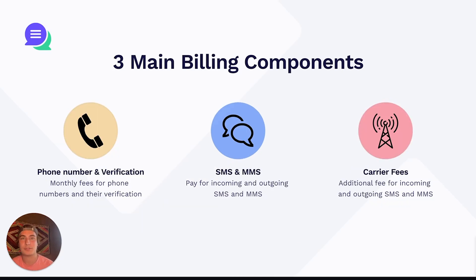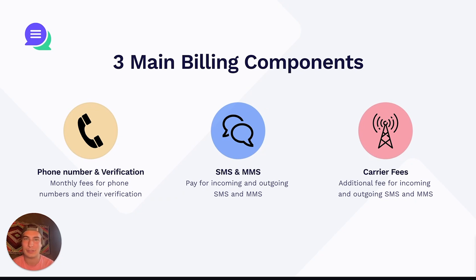So Twilio's pricing structure has three main billing components. First up is the phone number and verification. Next up is the per SMS and MMS fees — you're going to be paying for incoming and outgoing SMS and MMS. And lastly, we have carrier fees. This is what really confuses people the most. They're a bit difficult to calculate, but we have a super simple way to calculate your carrier fee costs. These are going to be an additional fee for incoming and outgoing SMS and MMS messages.